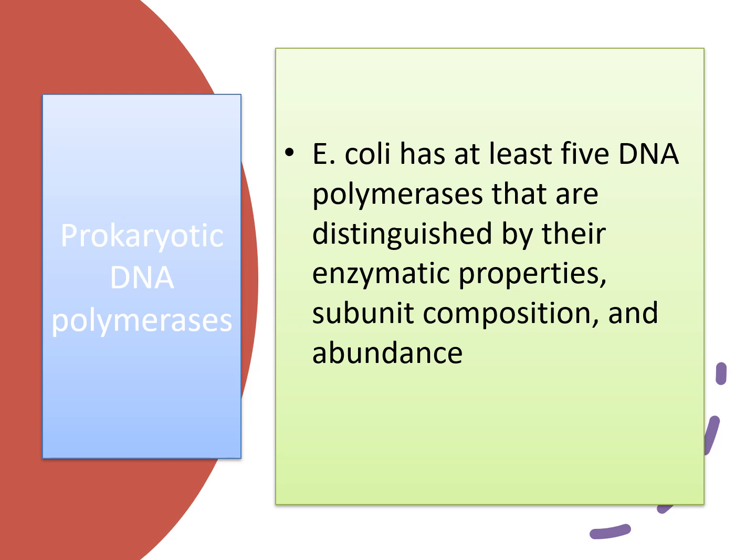Now we will see about prokaryotic DNA polymerases. In E. coli, we have at least 5 different DNA polymerases. They are distinguished mainly by their enzymatic properties, subunit composition, and abundance. So the 5 different types are classified based on these three criteria.